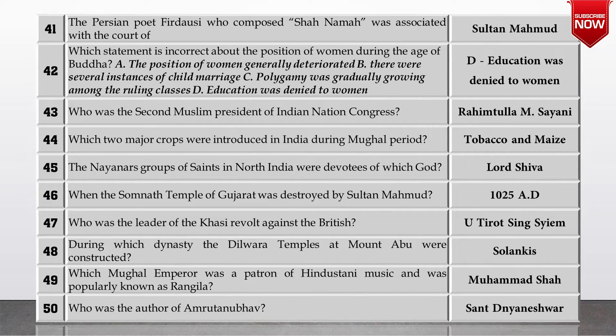Which two major crops were introduced in India during the Mughal period? The answer is tobacco and maize.